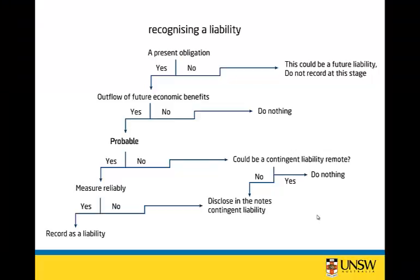In this topic we are looking at recognising liabilities, and in particular we're focusing on provisions and contingent liabilities. This diagram indicates the decision rules that you need to go through with an item to determine whether it is a liability, whether there should be a contingent liability, and whether it should be disclosed in the notes.